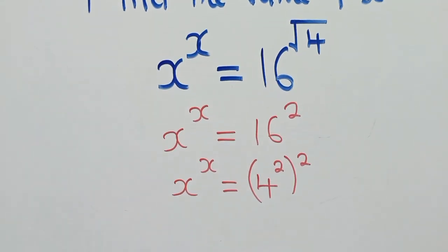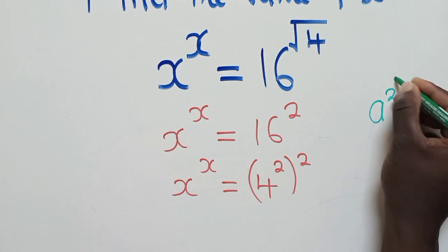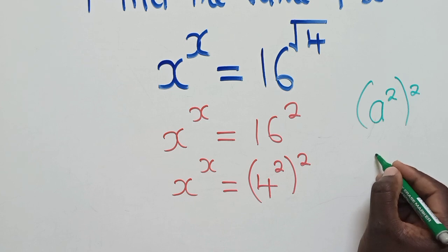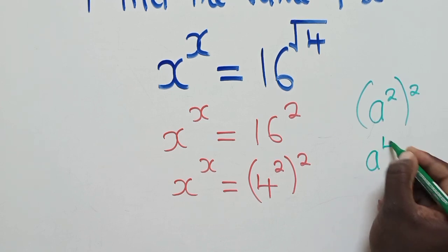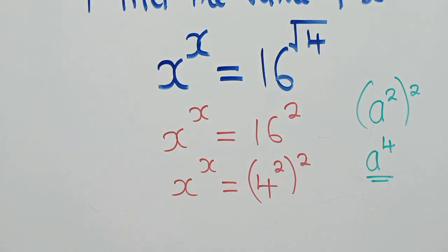If you're able to see there, when dealing with indices, if we have a power 2 and power 2, this would just be equal to a power 4. The laws of indices: when you have a power here and here, you multiply them. So it would be 2 times 2, which would give us 4. This idea is what we're going to apply here.